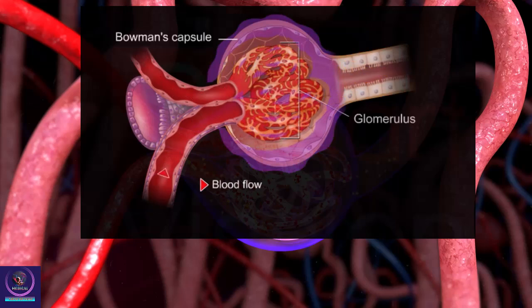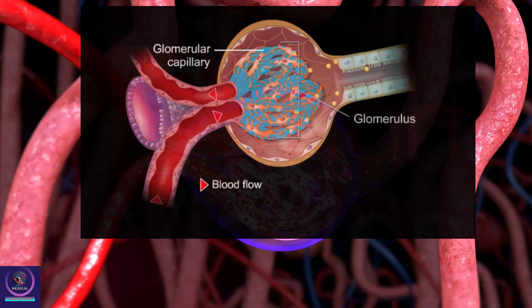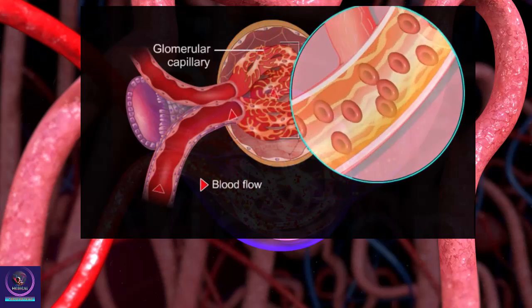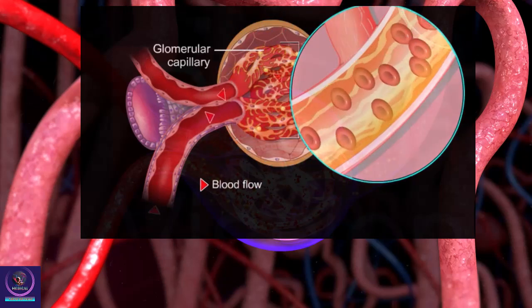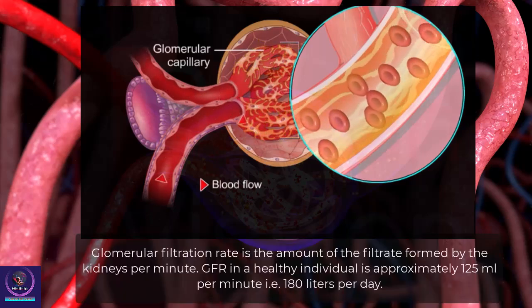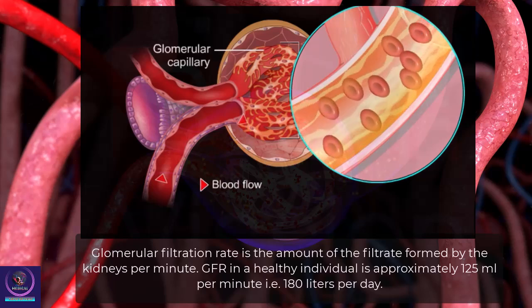Filtration is driven by glomerular capillary blood pressure. The epithelial cells of Bowman's capsule, called podocytes, are arranged intricately to leave minute spaces called filtration slits or slit pores. These membranes filter blood so finely that almost all plasma constituents except proteins pass into the lumen of Bowman's capsule. This process is therefore called ultrafiltration.